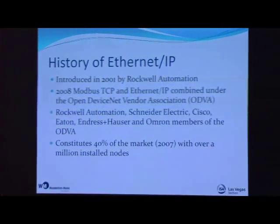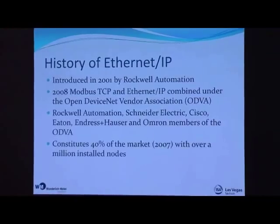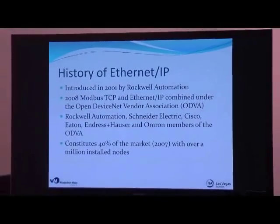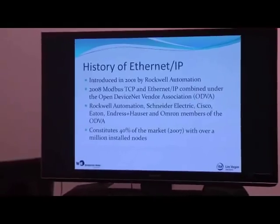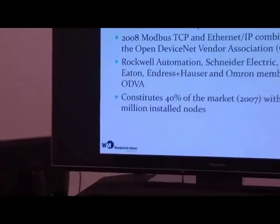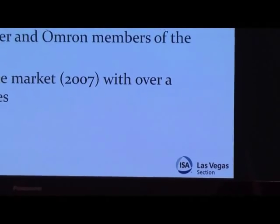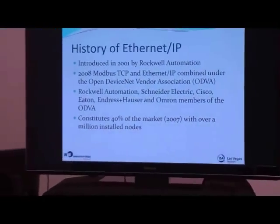To start out, we'll do a little bit of the history of Ethernet IP. Ethernet IP was developed in the 1990s and introduced in 2001 by Rockwell Automation. In 2008, Schneider Electric made the decision to introduce a Modbus TCP and Ethernet IP compatible communications module with their Quantum systems and to join the Open Device Vendor Association, the ODVA, to move forward with a single industrial Ethernet standard.